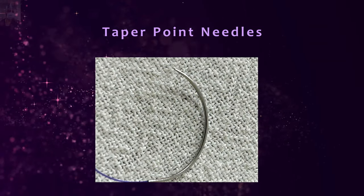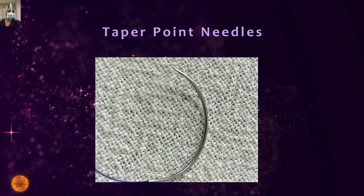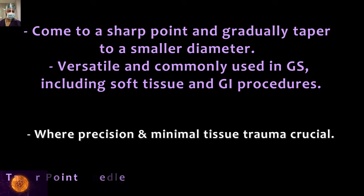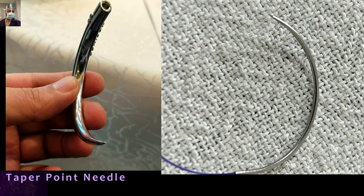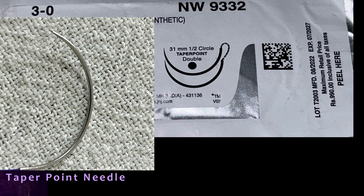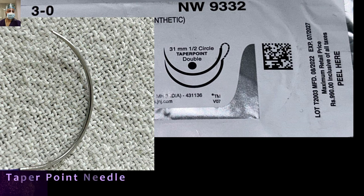Next, taper point needles. These needles have a sharp point, but the round body gradually tapers to a sharp point. These are very versatile and commonly used needles in general surgery, including soft tissue and GI procedures, and they provide more precision with minimal tissue trauma. Here for demonstration is a taper point needle — you can appreciate that the tip of the needle has a whole round body that gradually tapers to a point, with a gradual decline in diameter. This is a 3-zero taper point needle.